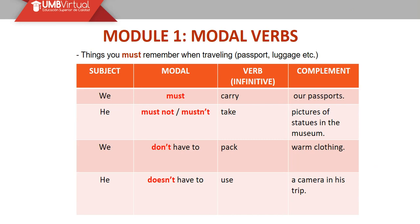Here we have modal verbs. These are things we must remember when traveling: we have passport, luggage, and it's a sale. The use of 'must' makes reference to an obligation. 'We must carry our passports' — it's necessary to do it. It's really like an obligation because if we don't have our passport, we couldn't travel.